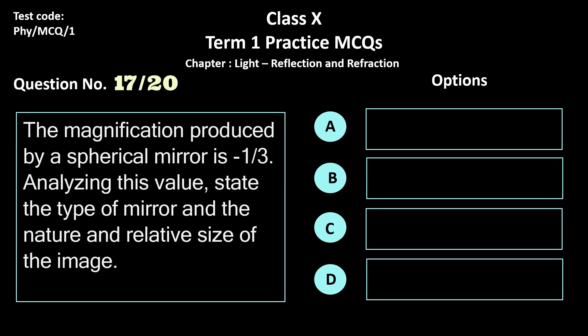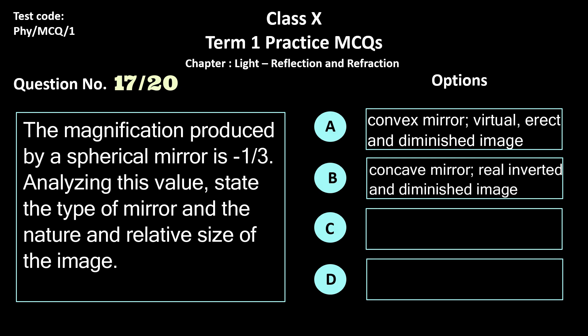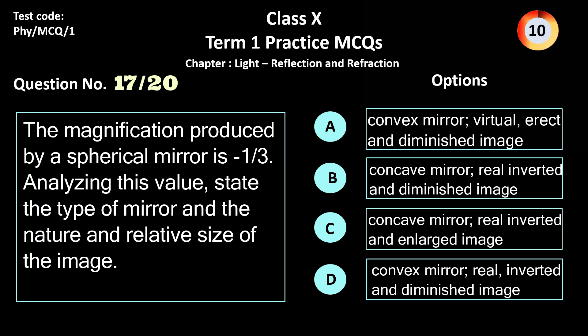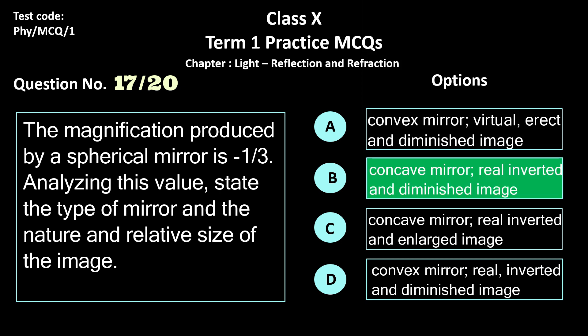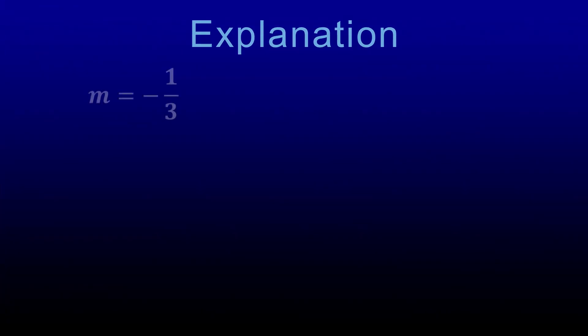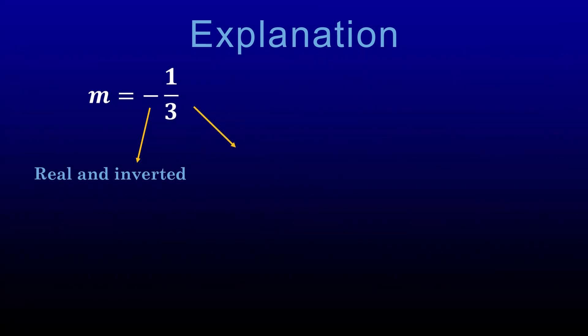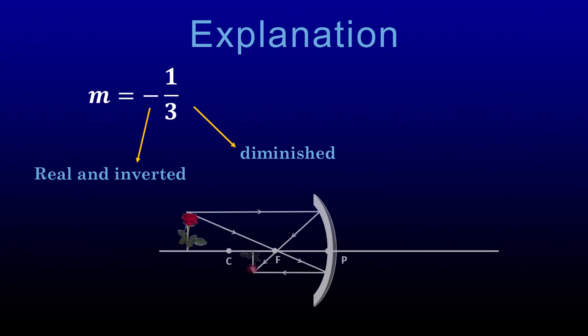Question 17. The magnification produced by a spherical mirror is −1/3. Analyze this value and state the type of mirror and the nature and relative size of the image. Options: a) convex mirror, virtual, erect and diminished, b) concave mirror, real, inverted and diminished, c) concave mirror, real, inverted and enlarged, and d) convex mirror, real, inverted and diminished. The correct answer is option b, concave mirror, real, inverted and diminished. The negative magnification indicates the image is real and inverted; the value 1/3 being less than 1 indicates the image is diminished, which can be obtained from a concave mirror.